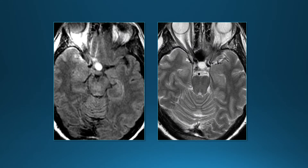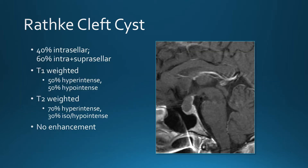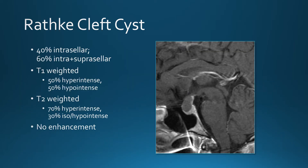Suprasellar mass, bright on FLAIR and bright on T2. On pre-contrast T1 it's iso-intense to brain, maybe slightly hyper, with no enhancement with contrast. It involves both the sellar and suprasellar region — this is a Rathke cleft cyst. These can be just intrasellar or combined intra- and suprasellar. On T1, half the time they're bright, half the time dark. On T2 the majority are bright but occasionally iso- or hypo-intense, depending on protein content, with no enhancement.